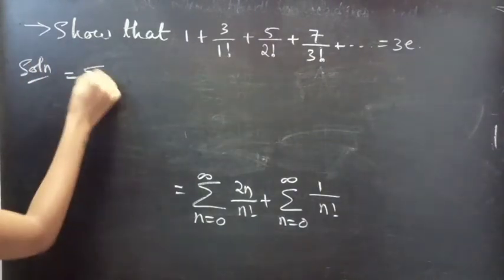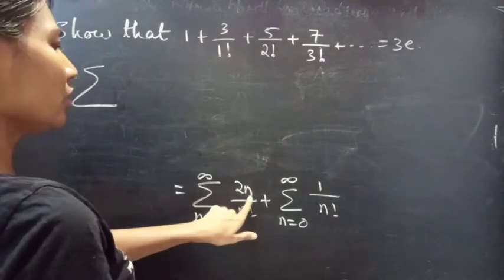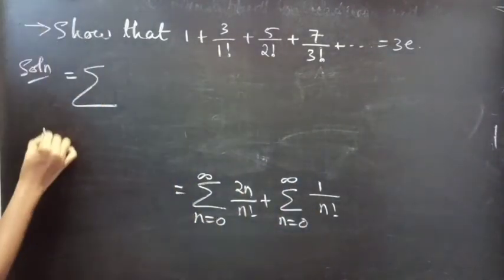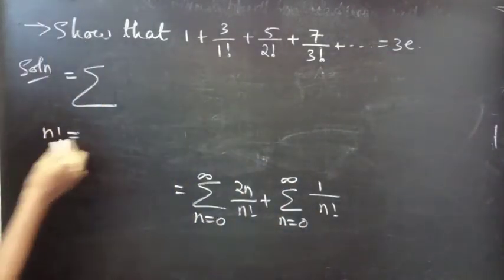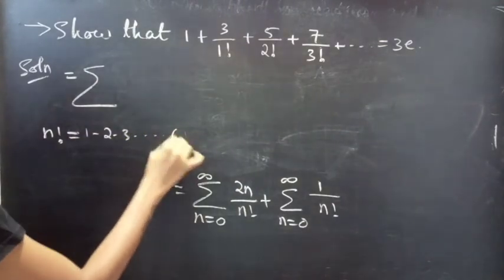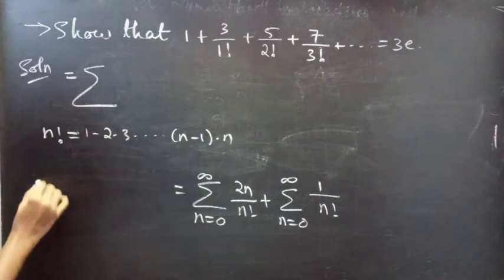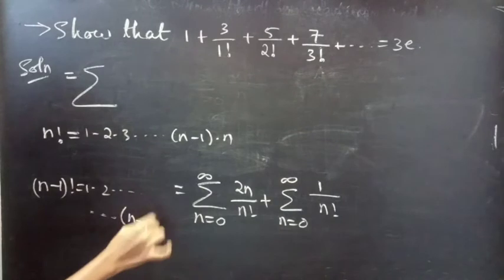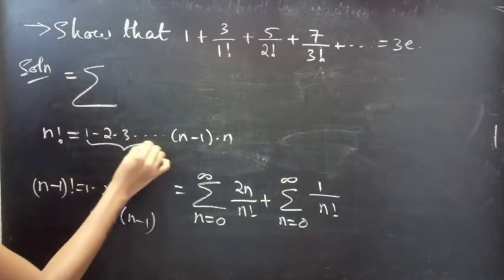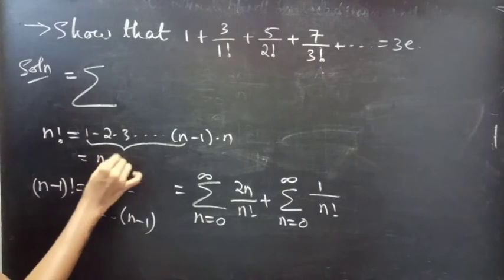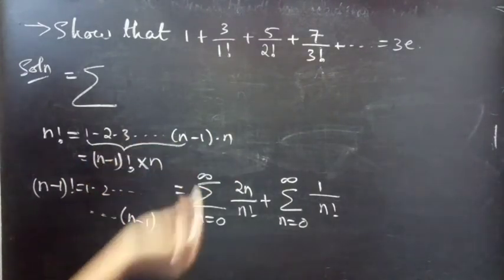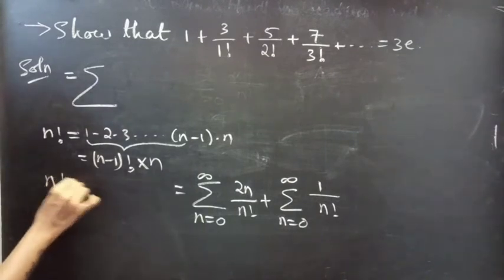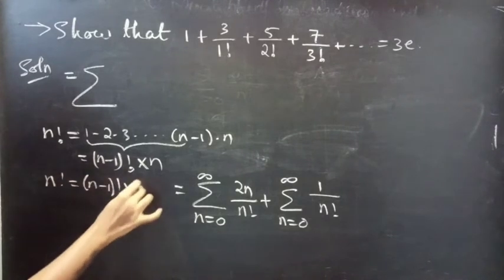In the first sum you have n in the numerator. In order to eliminate this n, we use the factorial formula: n! = 1×2×3×...×(n-1)×n. Also, (n-1)! = 1×2×...×(n-1). So we can replace n! by (n-1)!×n, giving us n factorial equals (n-1)! times n. You can now replace n! by (n-1)!×n.